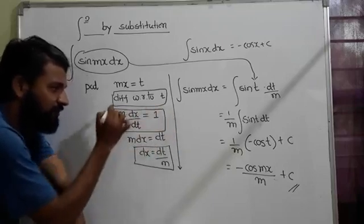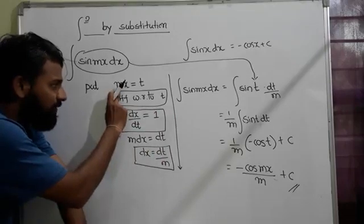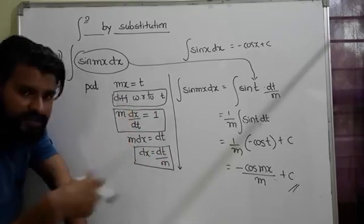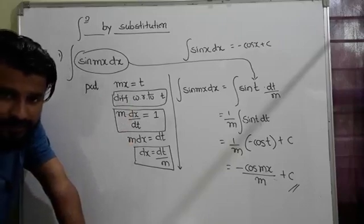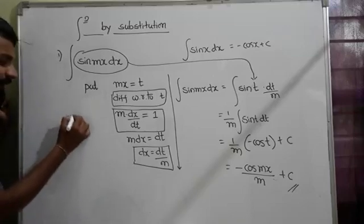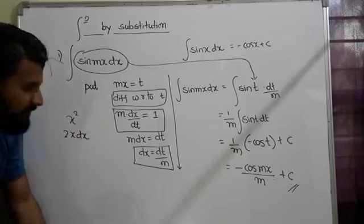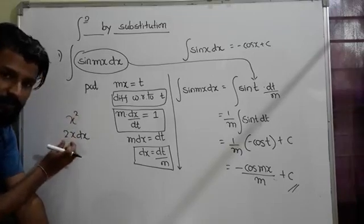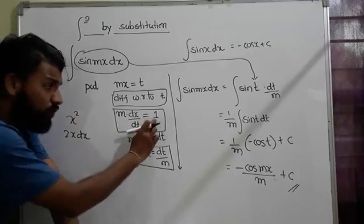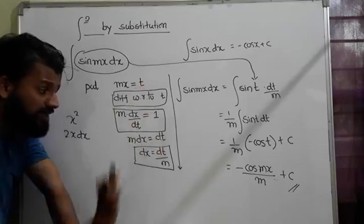So t was mx. This is -cos(mx)/m + c. That's the answer. These three steps are very important. In future, I won't write them because we'll assume we already know. We substitute, differentiate with respect to t - every time we'll do this, although we'll avoid writing this step.